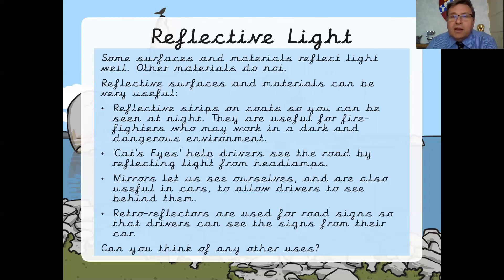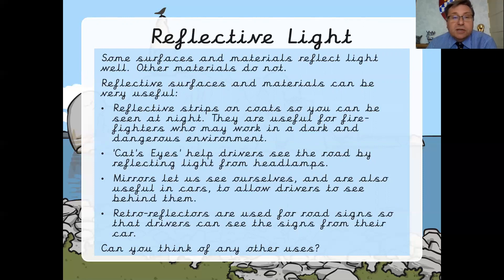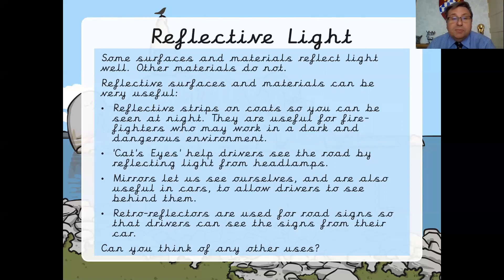Some surfaces obviously reflect light much better than others. We can see from my brief experiment that the cloth wasn't particularly good at reflecting light compared to metal. Reflective materials can be really, really useful. Reflective strips on coats enable you to be seen at night and they're particularly useful for people like firefighters who may have to work in the dark or the emergency services, because street lights or lights from cars reflect off them and you can really see people very clearly.